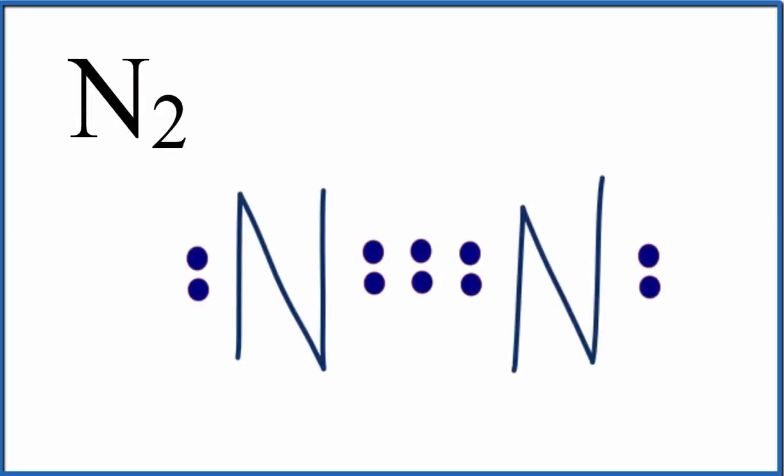Because this is a symmetrical molecule, all the electrons are going to be shared equally between the two nitrogen atoms. In fact, they're the same atom, so they're going to pull equally on those electrons and have that same electronegativity.